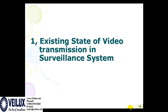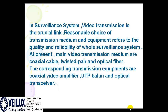We'll start with the existing state of video transmission and surveillance systems. In a surveillance system, video transmission is the crucial link — the responsible choice of transmission medium and equipment references the quality and reliability of the whole surveillance system. At present, the main video transmission mediums are coax cable, twisted pair, and optical fiber. The corresponding transmission equipment are coax video amplifiers, UTP Balins, and optical receivers.